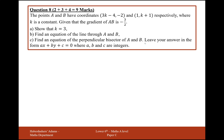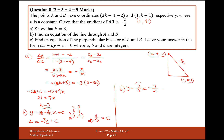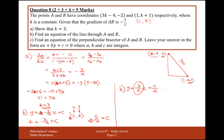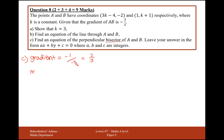Moving on to the next question: the perpendicular bisector of AB, leaving the answer in the required form. First, the perpendicular gradient to minus 3 over 2 is going to be 2 over 3. That's the classic trick: -1 ÷ (-3/2). The double negatives cancel, and 1 ÷ (3/2) flips the fraction to give 2/3. So we have the gradient. Since it's a perpendicular bisector, we also need the midpoint of AB.